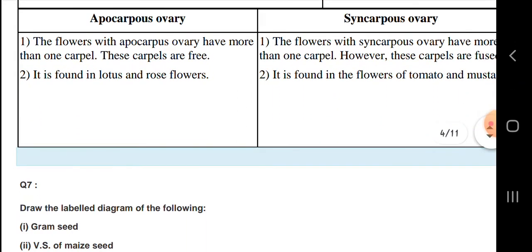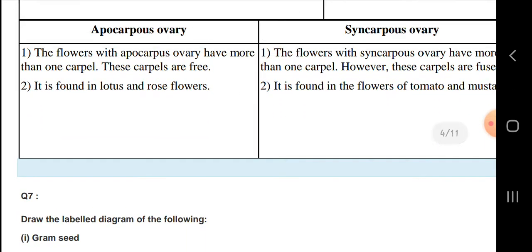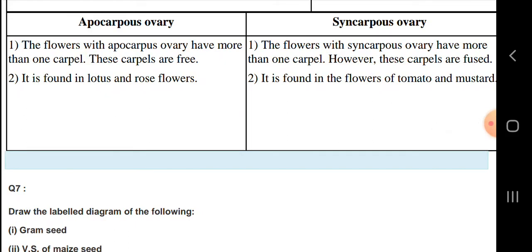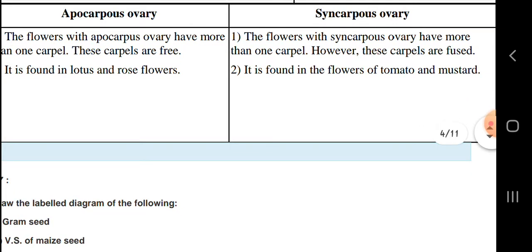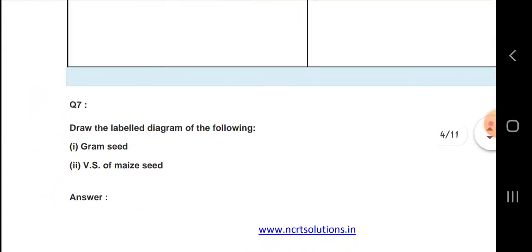In apocarpous ovary, the flowers have more than one carpel and these carpels are free. In syncarpous ovary, flowers have more than one carpel, however the carpels are fused.